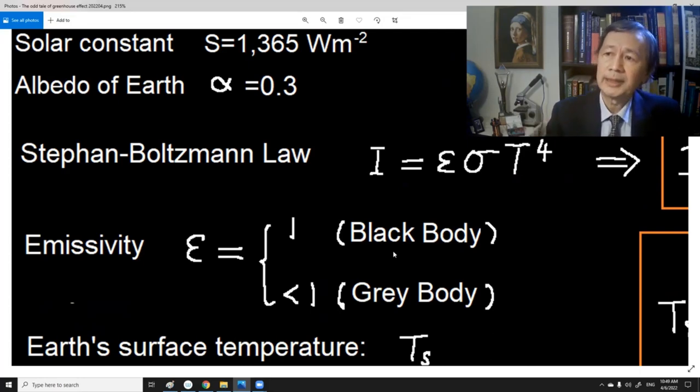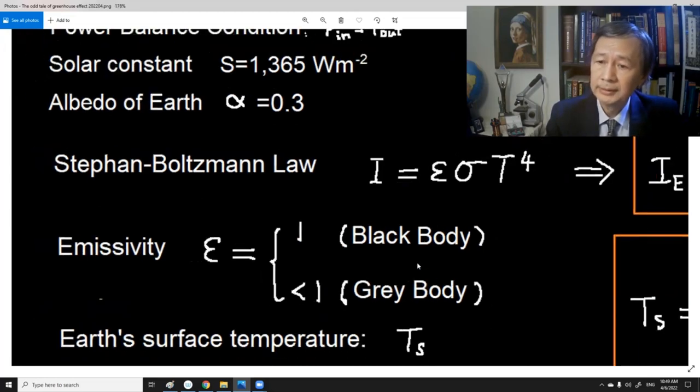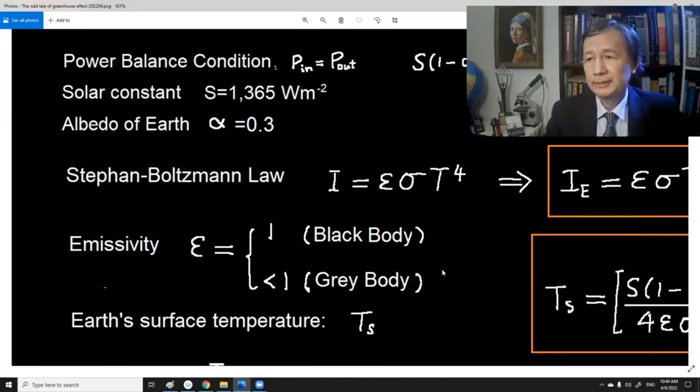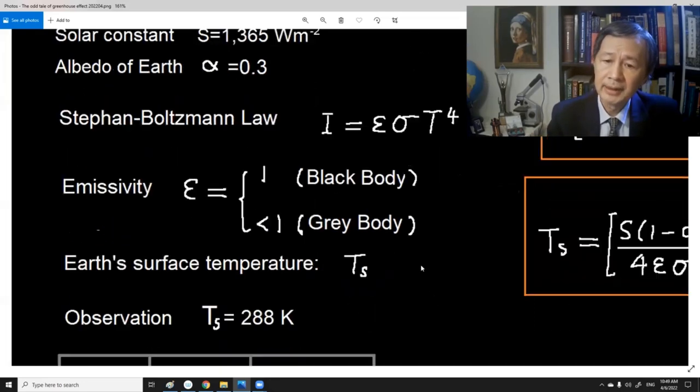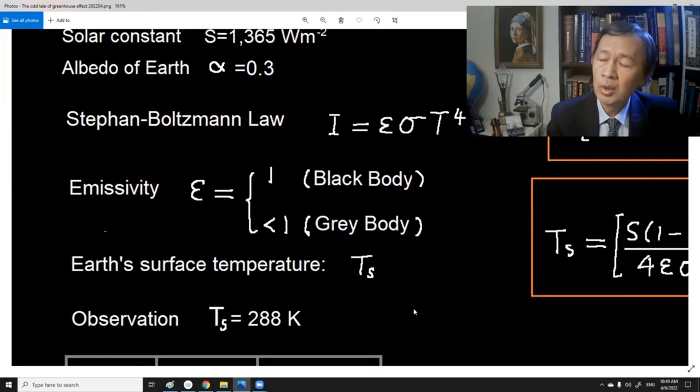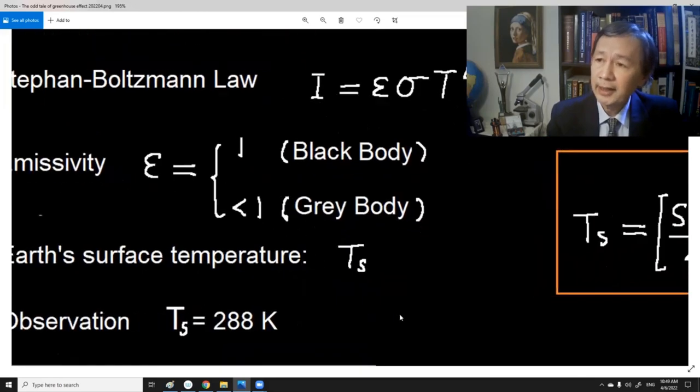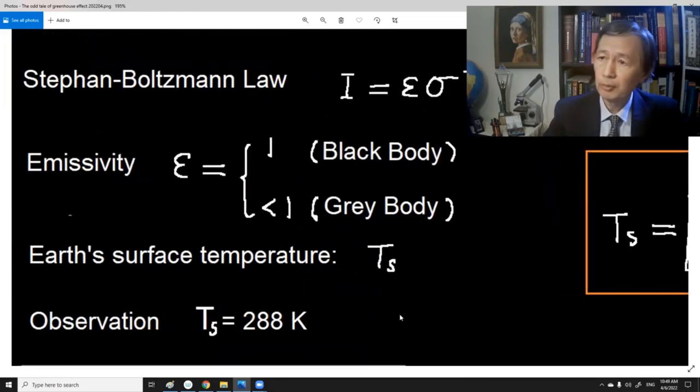Now, here we must point out that the emissivity is a very important parameter in the Stefan-Boltzmann law. The emissivity will equal to 1 or 100 percent for an ideal body called the black body. It's not the color, but just the ability to emit thermal radiation. That is the maximum value for the emissivity.